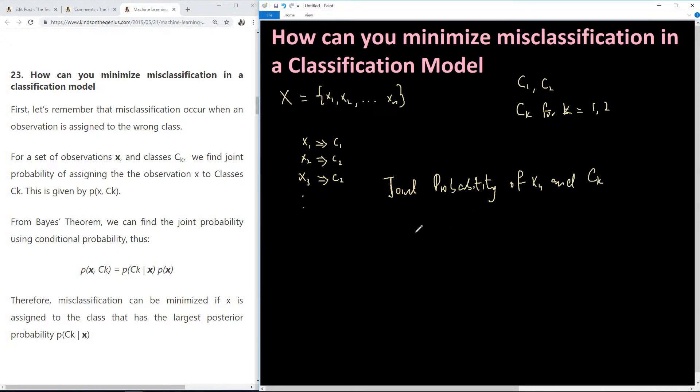So we have that probability is probability of x and Ck. So basically this probability is the probability that we assign the observation xi to class Ck. So this probability is very important because if there is a high probability that x belongs to class Ck then most likely we are assigning it to the right class.